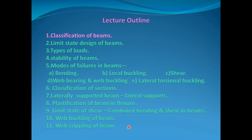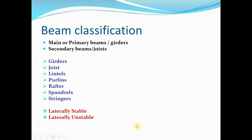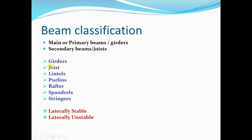Let us learn the classification of beams. Basically, beams are classified as main or primary beams (girders) and secondary beams (also called joists). There are different names for different beams as per their function, location, and load-carrying capacity. Beams are called girders, joists, lintels, purlins, rafters, spandrels, and stringers.